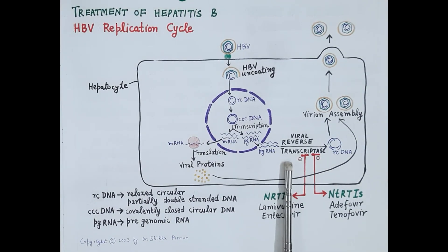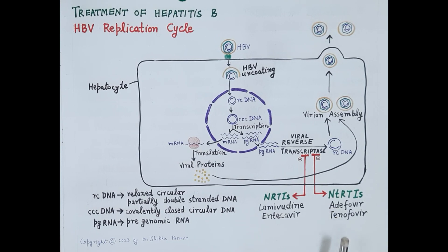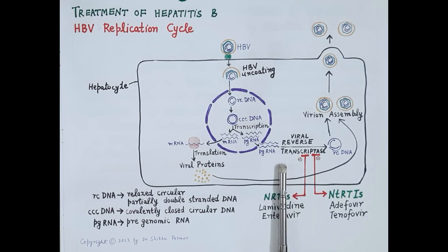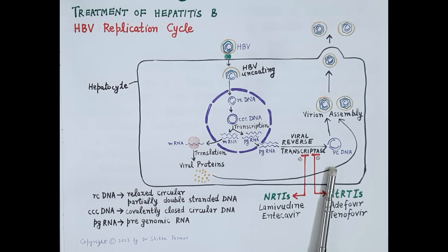Three categories of drugs are used for the treatment of hepatitis B: nucleoside reverse transcriptase inhibitors, which include drugs like lamivudine and entecavir; nucleotide reverse transcriptase inhibitors, which include drugs like adefovir and tenofovir. Both these categories inhibit the viral reverse transcriptase enzyme, thereby preventing synthesis of viral DNA. The third type of drug used is interferon alpha.